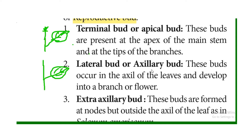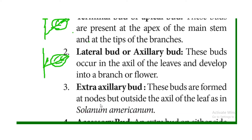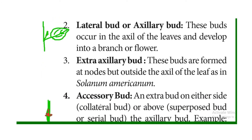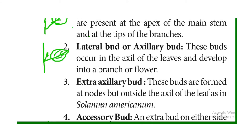Lateral buds or axillary buds are found at the leaf axil. The leaf forms an axil, and the bud formed in that axil is the lateral or axillary bud. Extra-axillary buds are formed at the nodes in the axillary region, outside the axil of the leaf.